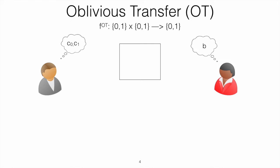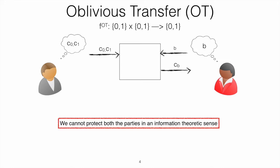This is called the oblivious transfer functionality. The idea here is that the input of Bob consists of two strings or two bits for simplicity, and the input of Alice is just one bit b. The functionality returns to Alice just the string of Bob with index b — in this case, c_b. Unfortunately, we know that we cannot realize in the plain model this functionality with information-theoretic security.